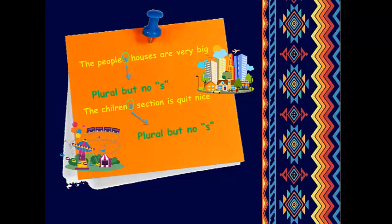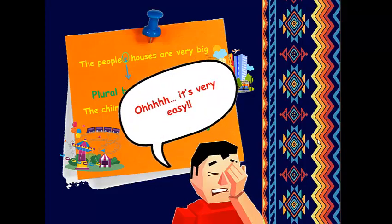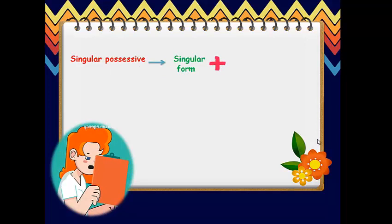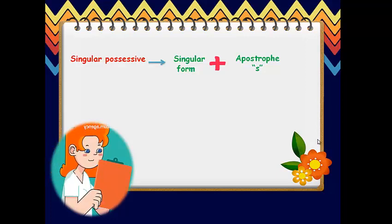Is it clear now? Yes, it's very easy. Okay, now, please, let's write the rules with me. First, if you want to make a singular possessive noun, you'll just take a singular form of that noun and add apostrophe S. All the time, in all cases, no matter what, it doesn't matter what letter the word ends with. If it's singular possessive, it has apostrophe S.